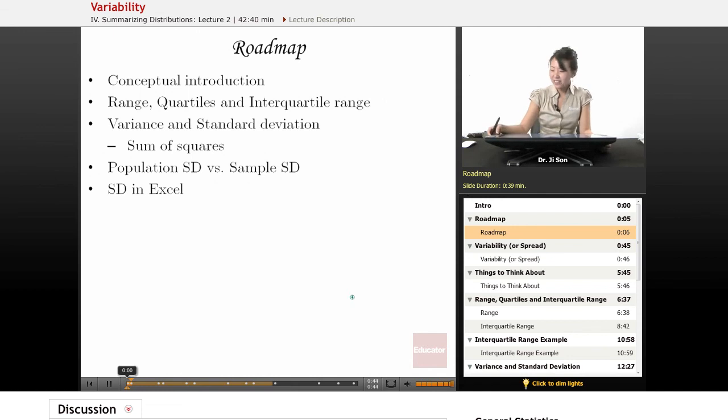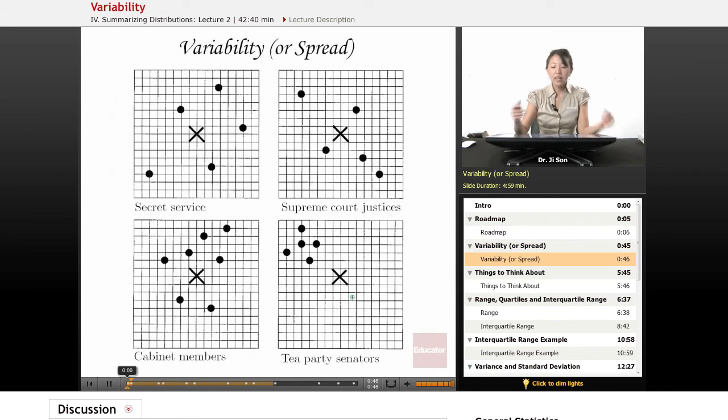All right, let's get started. So let's think about a conceptual way of thinking about variability. There's lots of different ways that you could actually think about variability. So, for instance, let me give you this example.